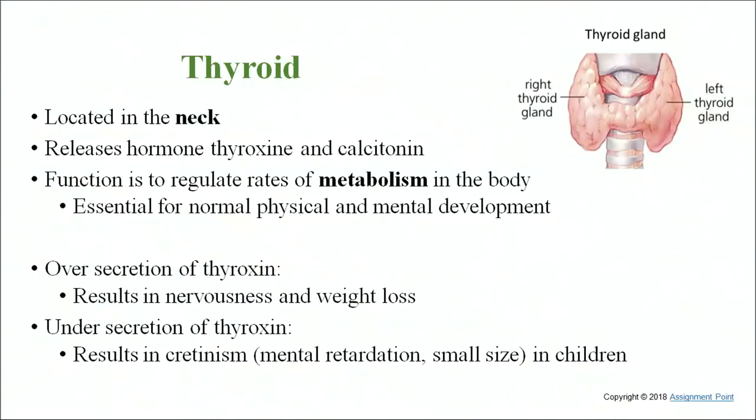The thyroid gland is located in the neck area and releases two hormones: thyroxine and calcitonin. Thyroid regulation is controlled by a cascade pathway — thyrotropin releasing hormone (TRH) regulates thyroid stimulating hormone (TSH), and TSH in turn induces the thyroid gland to secrete its hormones. Thyroxine regulates basal metabolism, the rate of cellular oxidation resulting in heat production, and also controls growth, body temperature, and mental development.